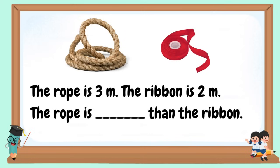The rope is 3 meters. The ribbon is 2 meters. The rope is ___ than the ribbon.